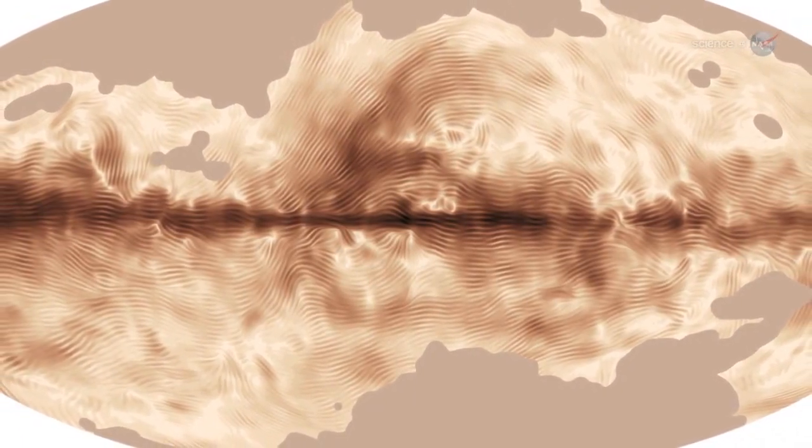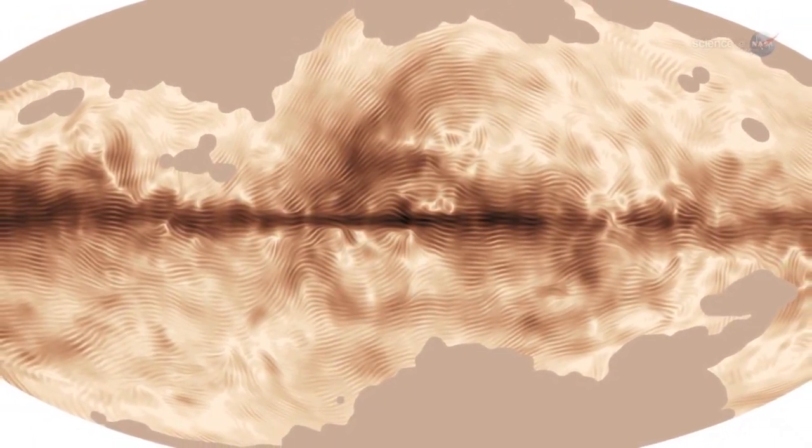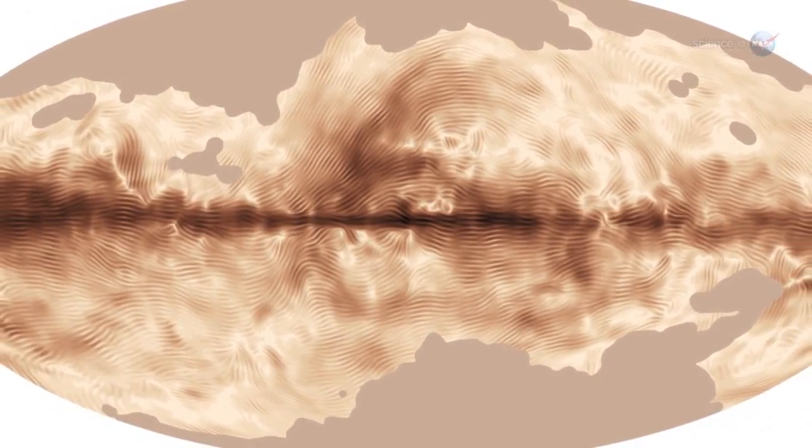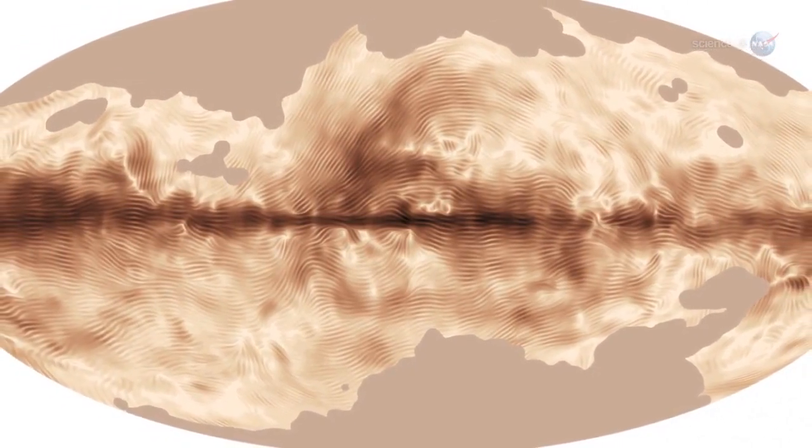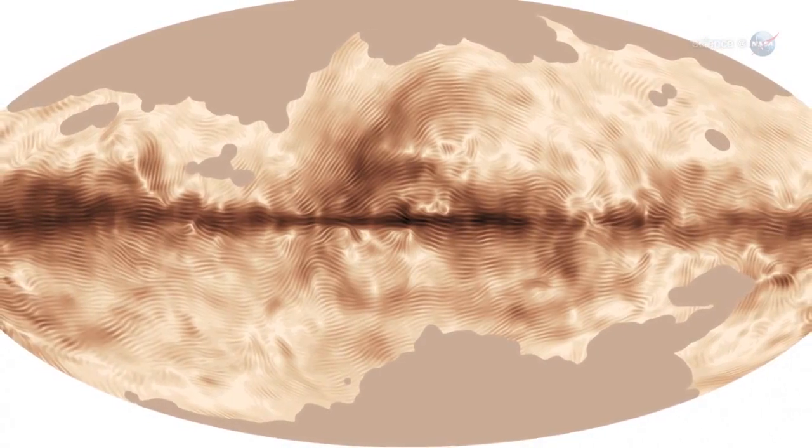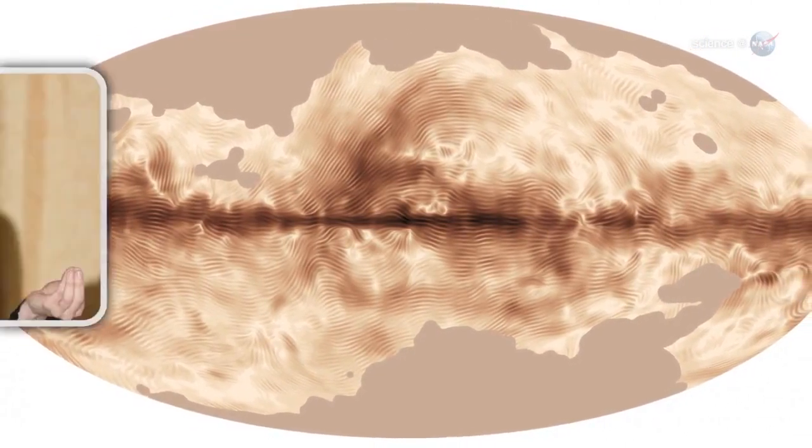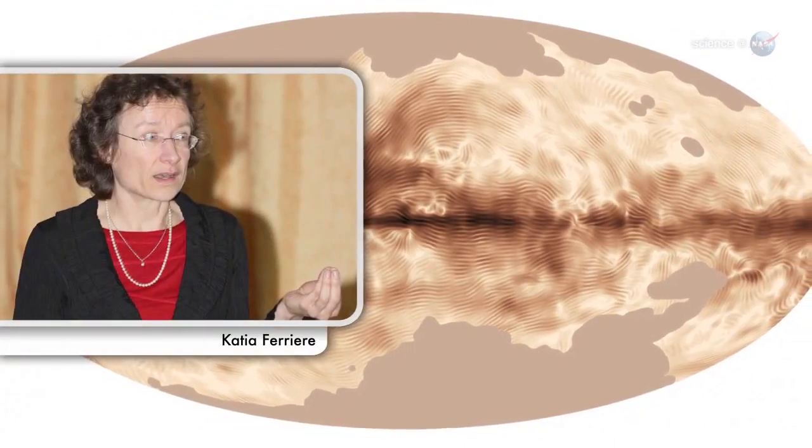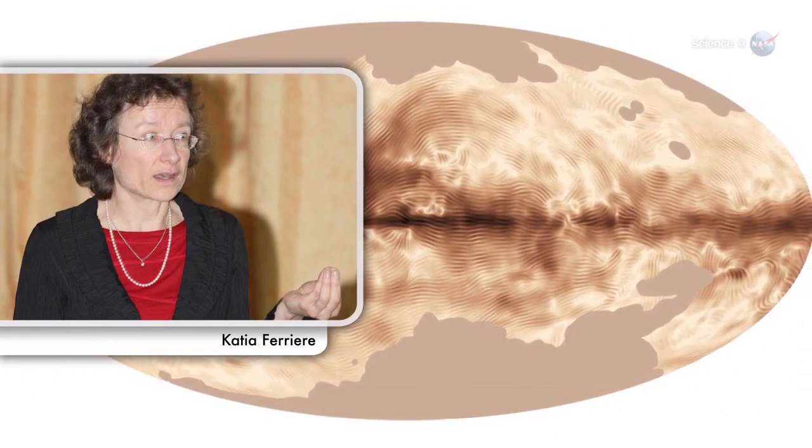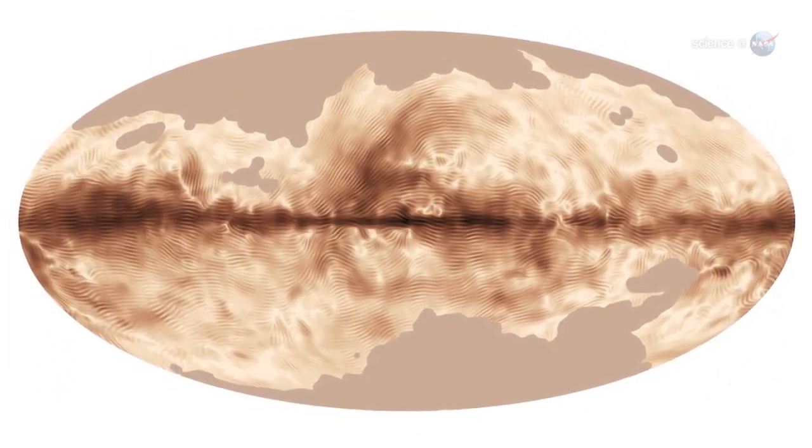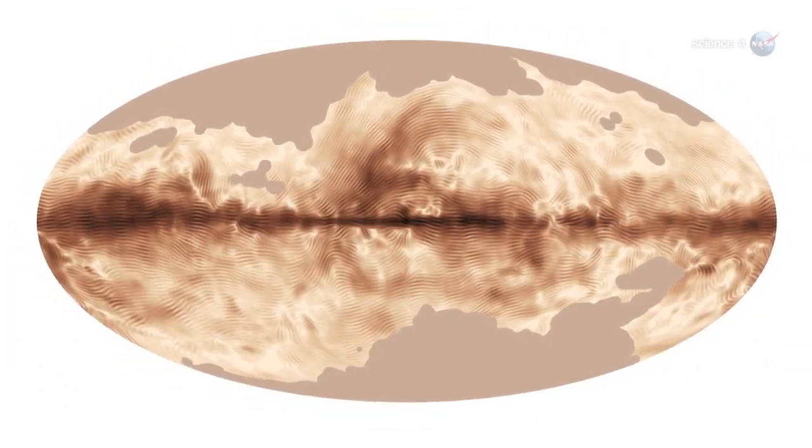The Planck map, which resembles a giant fingerprint, is proof of a galactic dynamo at work. This dynamo operates in the interstellar medium that pervades our galaxy, says Katia Ferriere, a member of the Planck science team at the Institut de Recherche en Astrophysique et Planetologie in Toulouse, France.